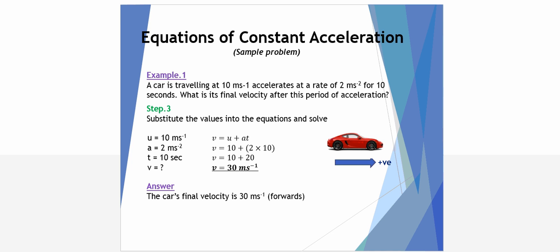Step three is to substitute the values into the selected equation and solve. Where we had a U, we substitute the value 10. Where we have an A, we substitute the value 2, and where we have a T, we substitute the value 10. So, V equals 10 plus two times 10, which is 20, so our final velocity for this particular problem is 30 metres per second. The car's final velocity is 30 metres per second forwards because it's a positive value. Common sense would suggest that if you're starting at 10 metres per second and you accelerate at a rate of 2 metres per second every second for 10 seconds, you'll speed up by 20. So, 30 metres per second is a logical answer.